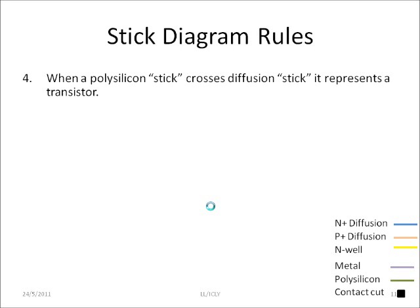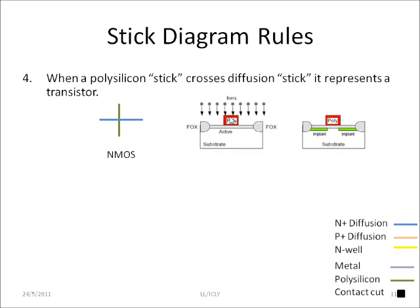When the poly stick crosses the diffusion stick, it represents a transistor. Here you see the green polysilicon crosses the n plus diffusion, you get an nMOS. To explain how this happens, you have your green polysilicon and your active n diffusion mask. The polysilicon will also act as a mask. As a result, you have n plus at the sides of the polysilicon gate. Remember that when the polysilicon stick crosses the diffusion stick, you get a transistor.